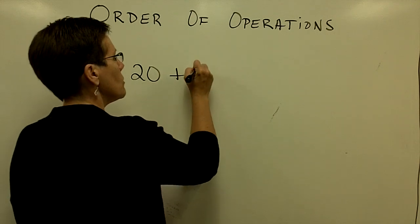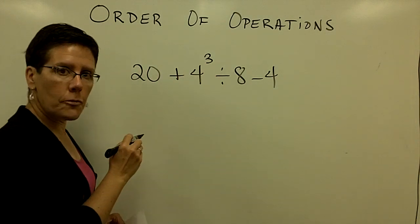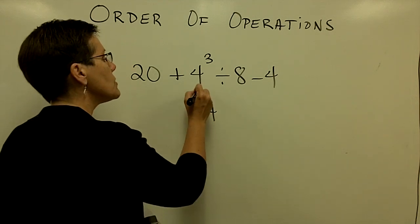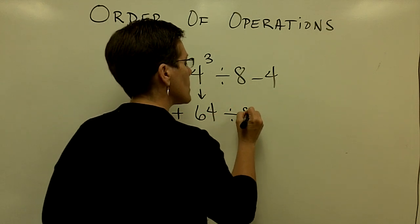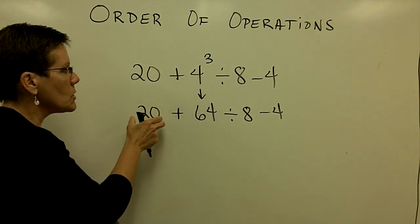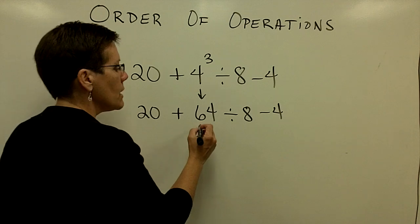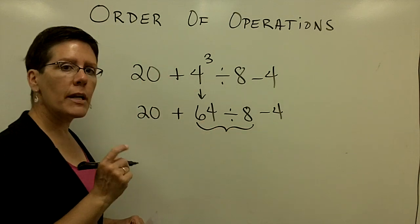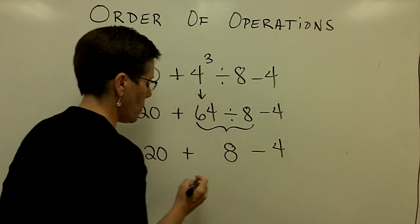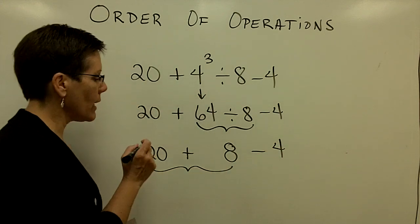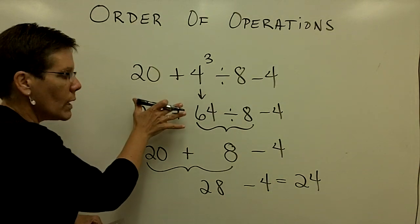Let's take 20 plus 4 cubed divided by 8, minus 4. Order of operations says I should do the exponents first. 4 to the third power is equal to 64. Bring down every symbol — your best habit is to bring everything down right underneath with no shortcuts and show all of your work. Next, I divide before I add and subtract: 64 divided by 8 is 8. So I take 20 plus 8 minus 4. Working from left to right: 20 plus 8 is 28, and then subtract 4 to get 24.